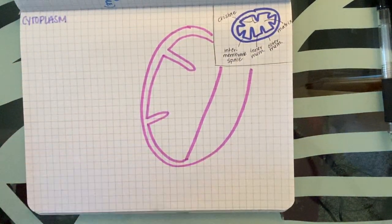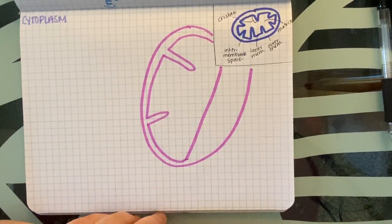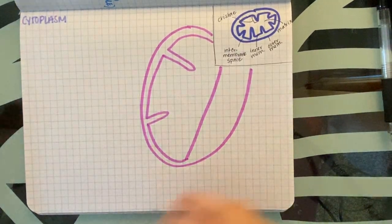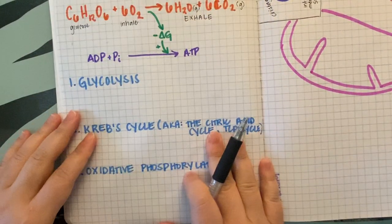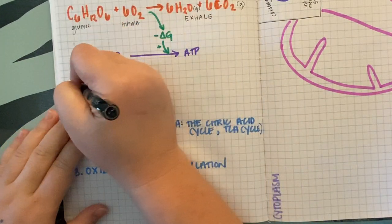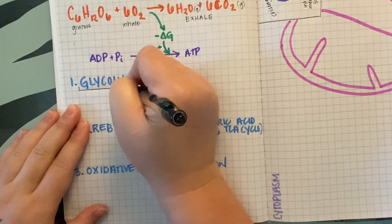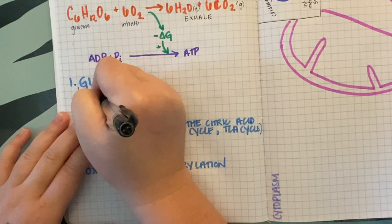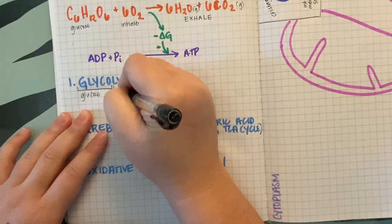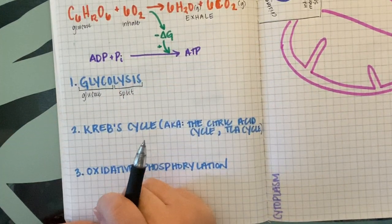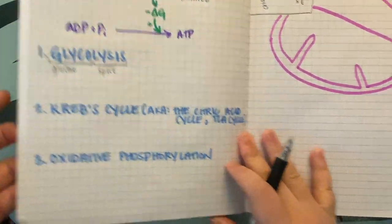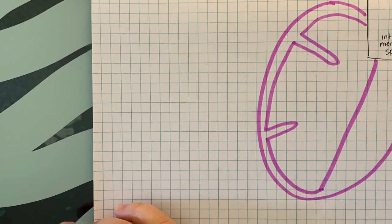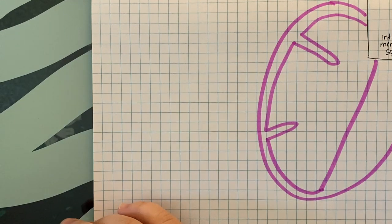Our first step is glycolysis — the process is literally in its name. Glyco refers to glucose or carbohydrate, and lysis means to split — when cells lyse, they pop or split open. So in glycolysis we are literally going to take our glucose molecule, C6H12O6, and split it.